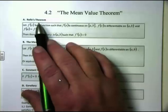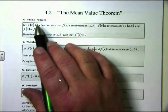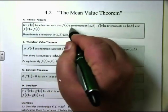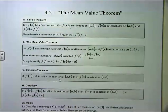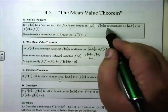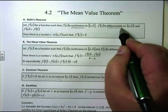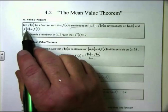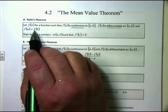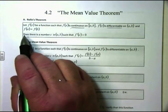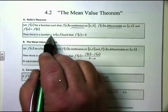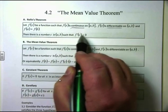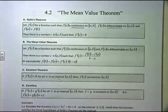But we're first going to start out with Rolle's theorem. Rolle's theorem says this: let f of x be a function such that f of x is continuous on the closed interval between a and b, and f of x is differentiable — which means you can take a derivative — at any point on the open interval between a and b. And the third condition: f of a has to be equal to f of b. Then Rolle's theorem says there is a number c in the open interval between a and b such that f prime of c equals zero. In other words, we can find ourselves a critical point.